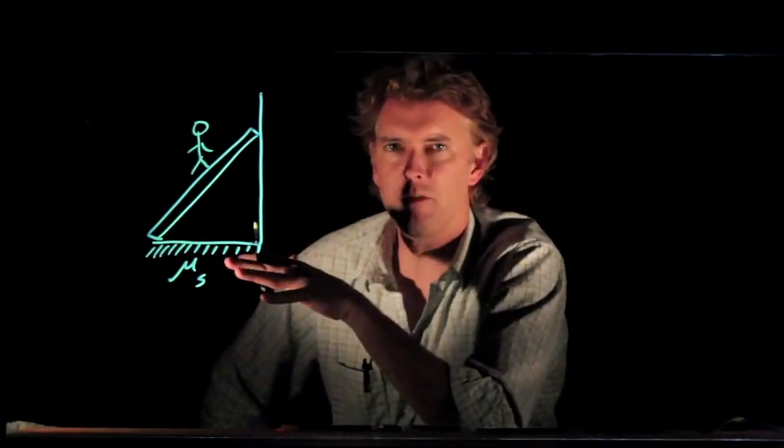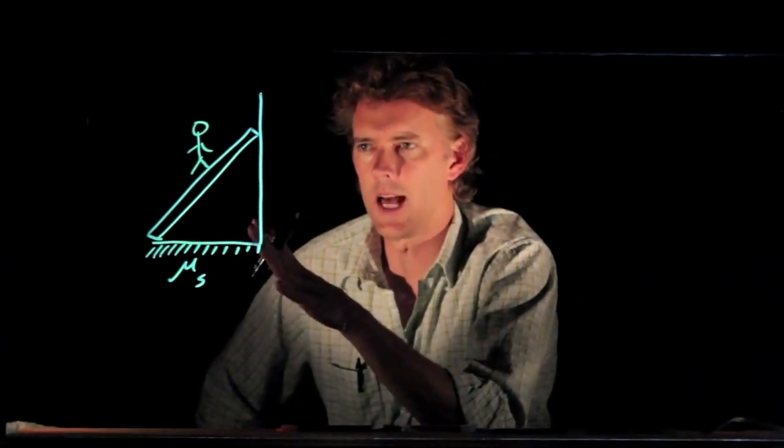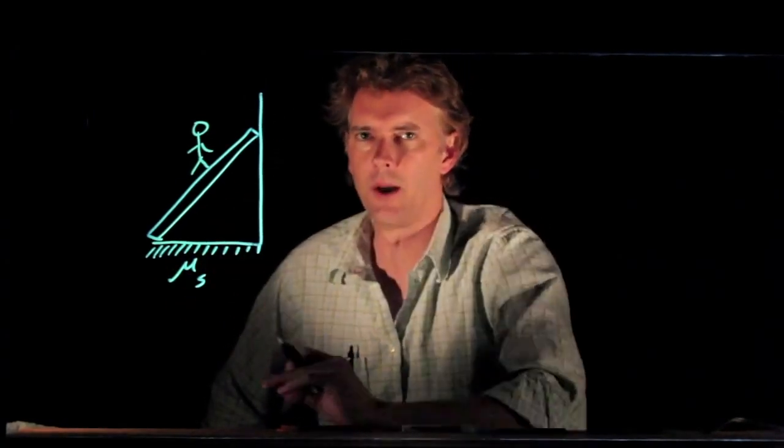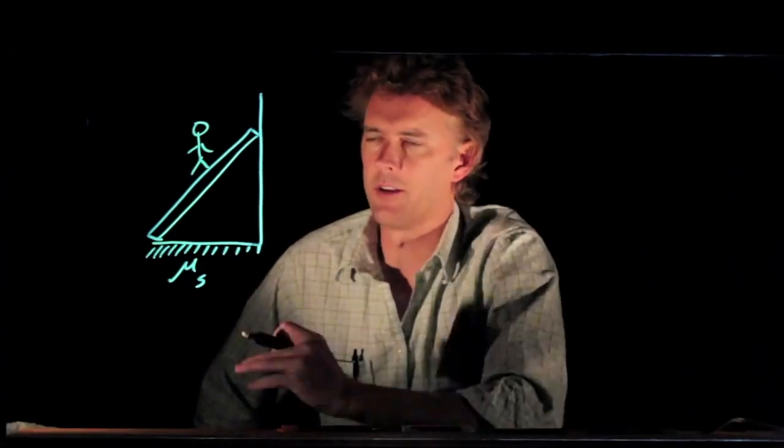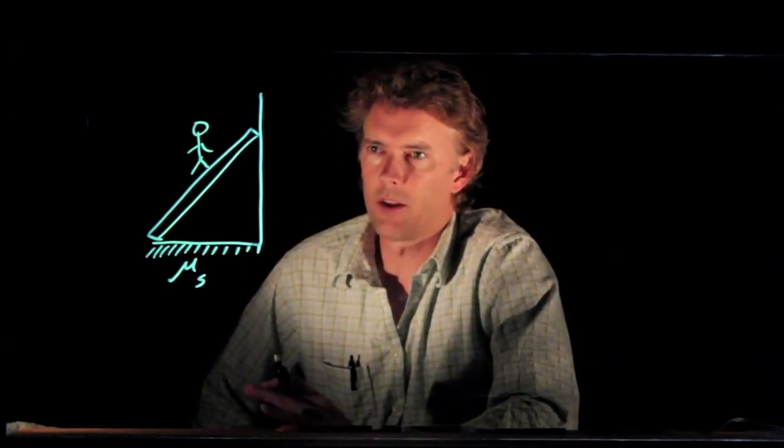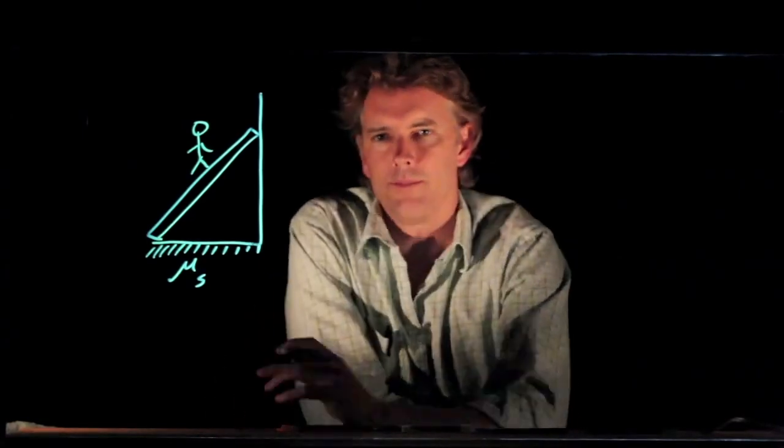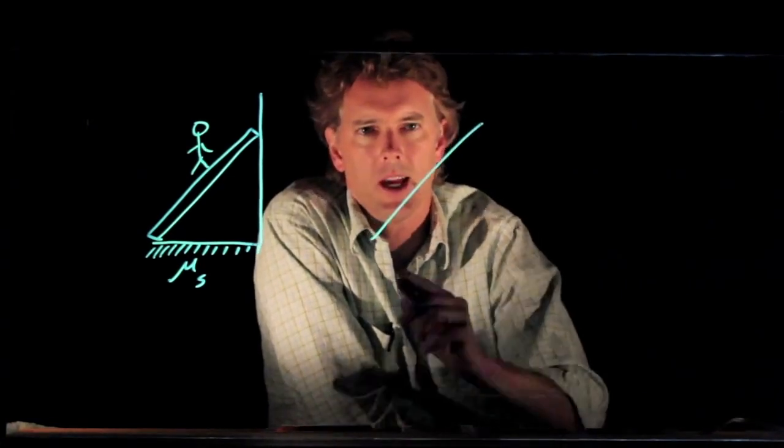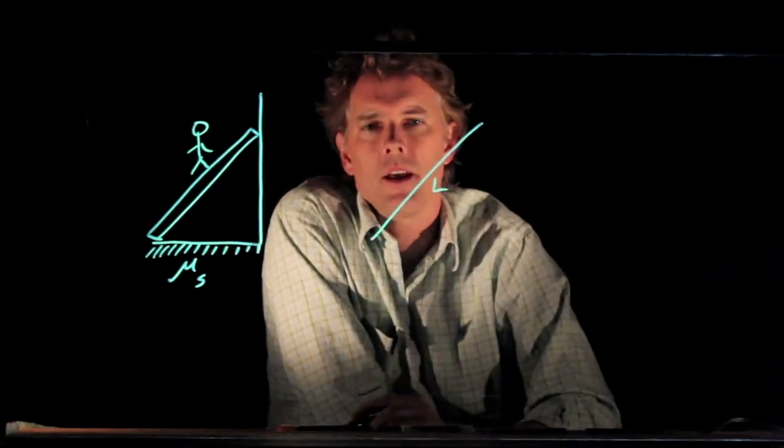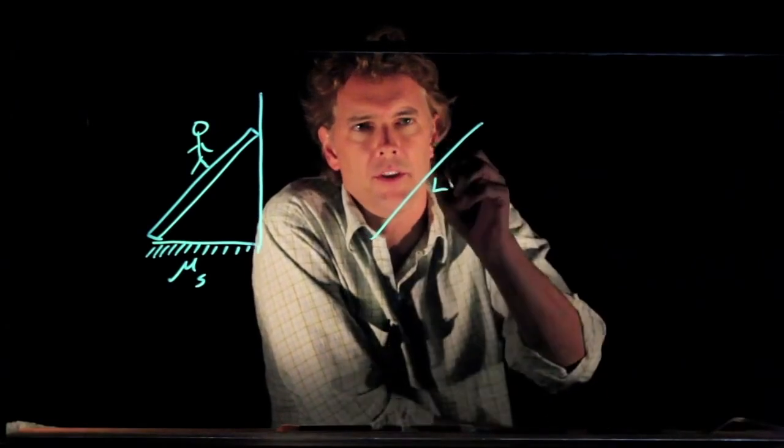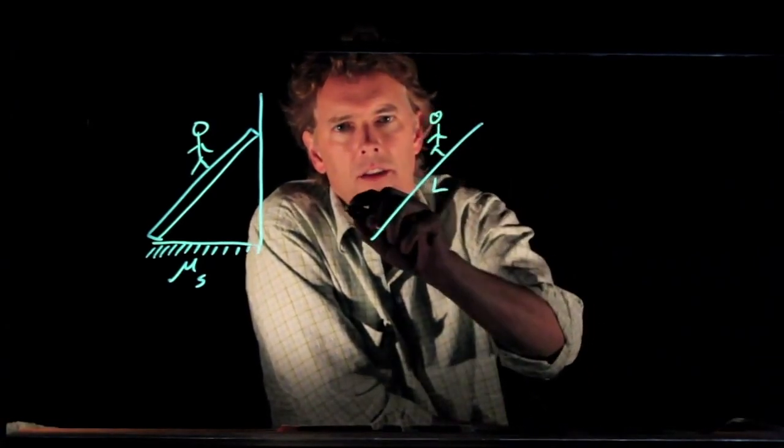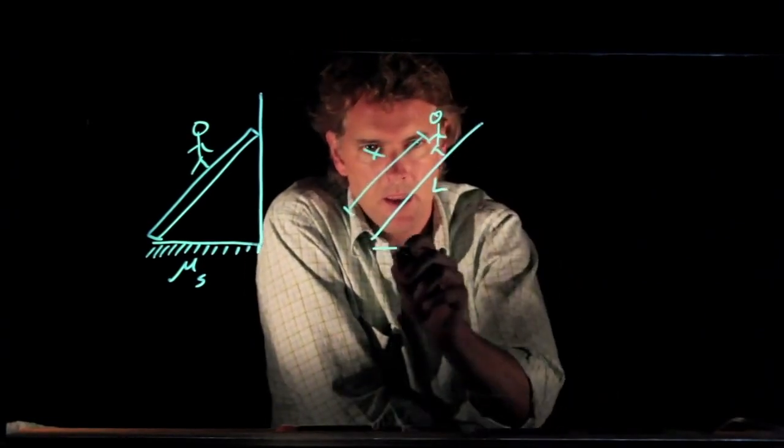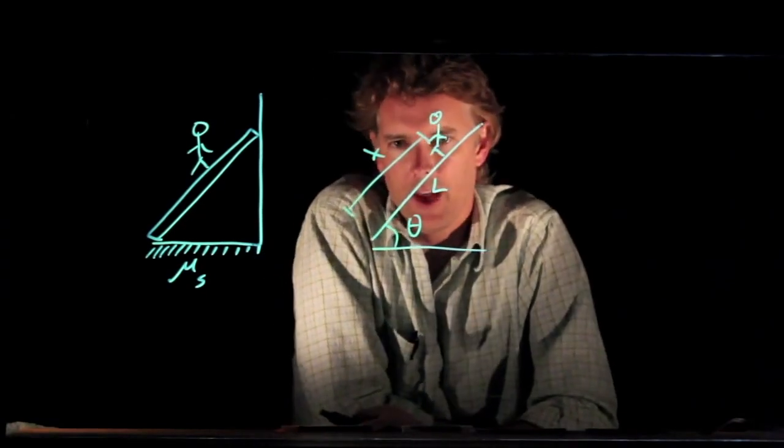how far up can a person climb on the ladder before the ladder slips and falls? And you're all sort of familiar with this idea, when you lean a ladder up against a wall, if you're down the bottom it's stable, but as you go further and further up it can get unstable and eventually fall. So how would we model this problem? Well, let's draw the ladder again and the ladder has length L. Let's say that the person is a distance x up the ladder and the angle between the ladder and the floor is theta.